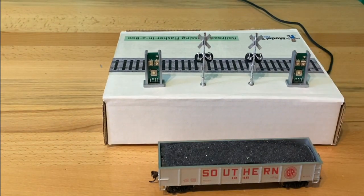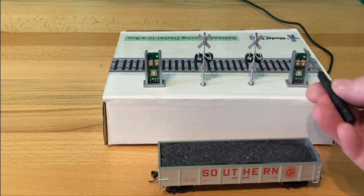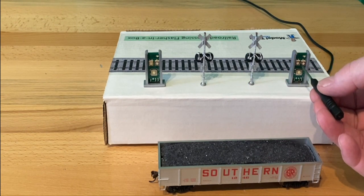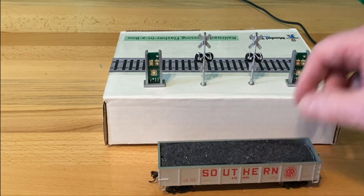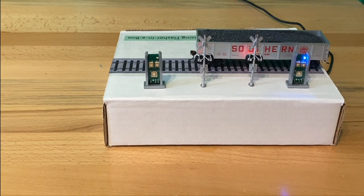So the range can be set with a screwdriver and adjusting this little trim pot, and if you have access to it, you can adjust it very nicely, and you can just see if we put the train car in front, it detects the train.